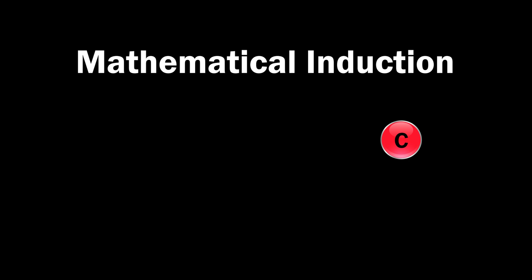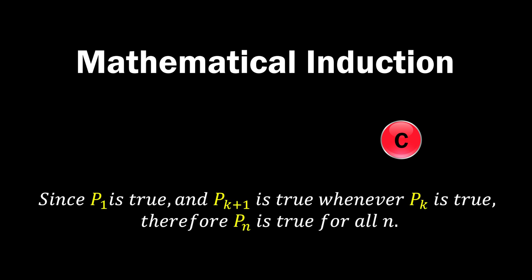Number five, if everything checks out in the previous steps, it is time to write the conclusion. Let's denote this as c. The conclusion will be in the form: since p1 is true and pk plus 1 is true whenever pk is true, therefore, pn is true for all n.